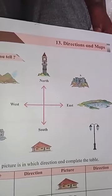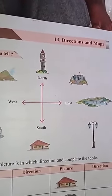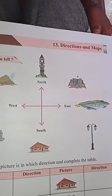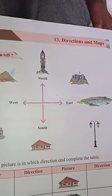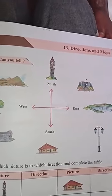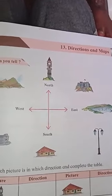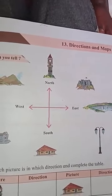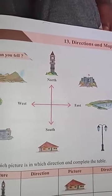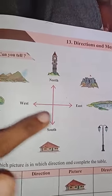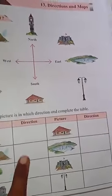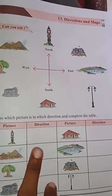So there are main directions and sub-directions. Directions and sub-directions have been determined by man on the basis of the rising and setting of the sun. The sun rises in the East and sets in the West. Based on that we determine the four main directions: East, West, North, and South.